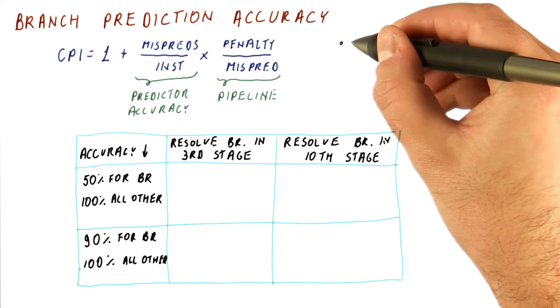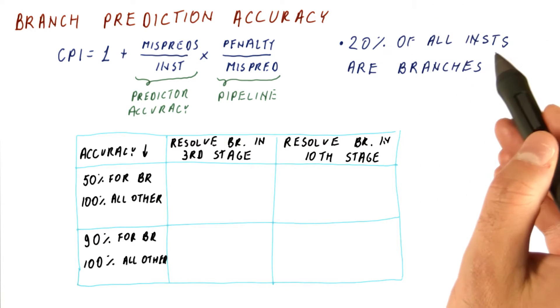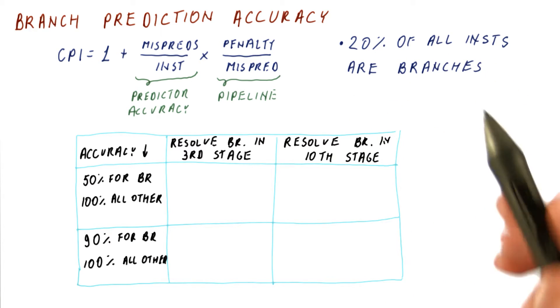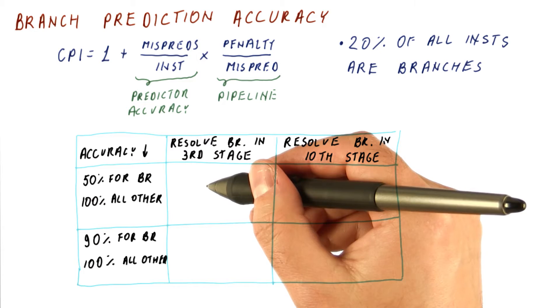And in all of this we will be assuming that about 20% of all instructions are branches. This is pretty common in programs. Now, let's compute our CPIs.